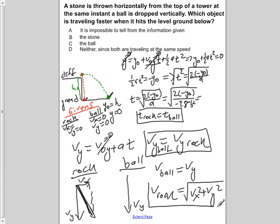We can see that the velocity of the rock is going to be greater than that of the ball. The stone or rock will hit the ground and will be traveling faster when it does so compared to the ball.